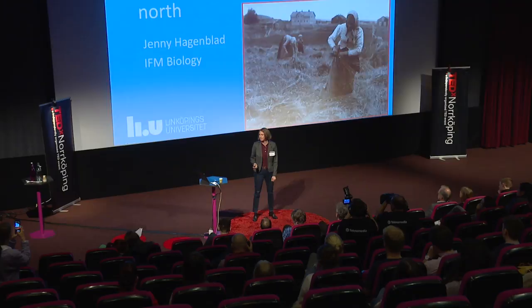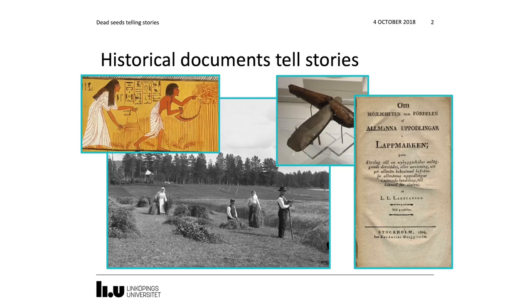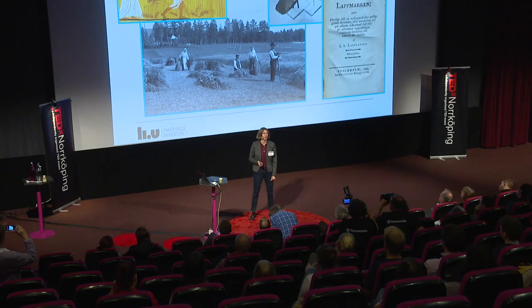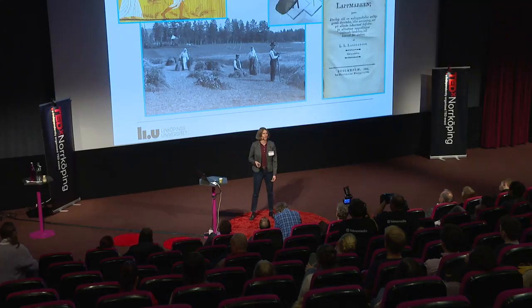It's very nice to be here this evening and be allowed to tell you about two things that interest me very much, because I'm not only interested in genetics, I'm also interested in history. There are several different ways that we can find out about history and there are different types of historical documents — things that people have left behind, written sources in old books or on walls of pyramids, drawings, or photographs. All these historical documents tell us stories about how things were in the past.